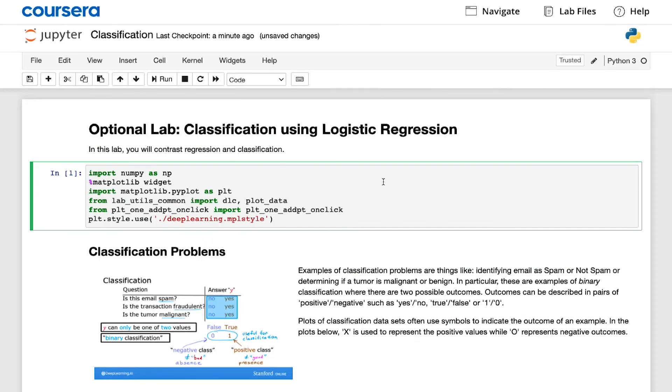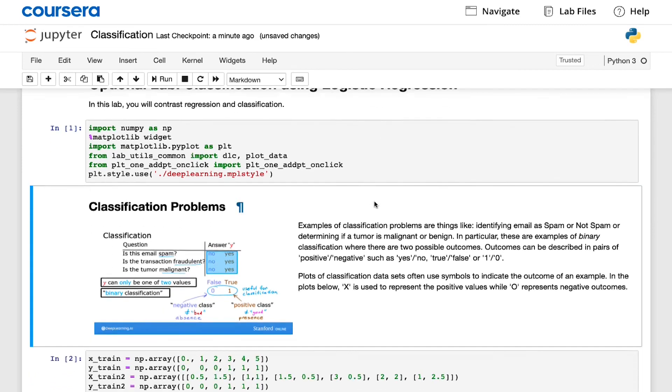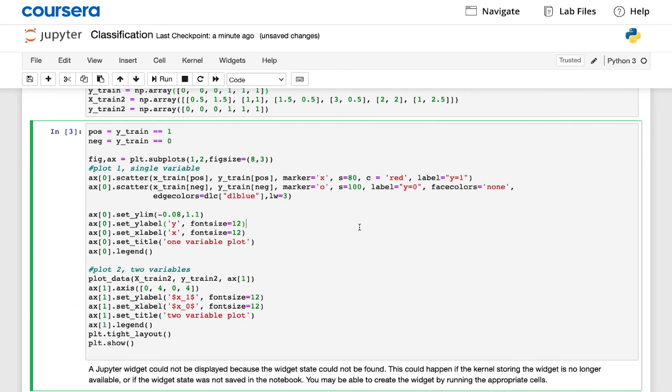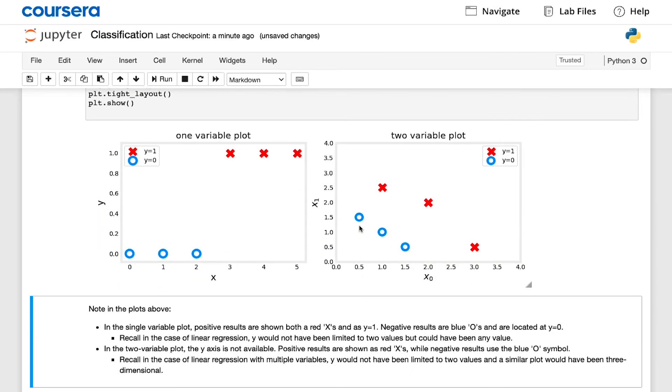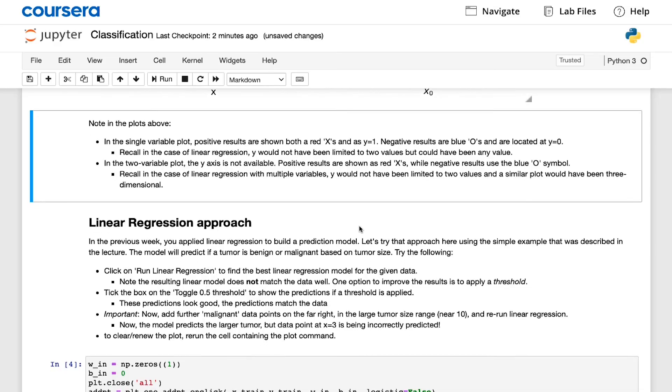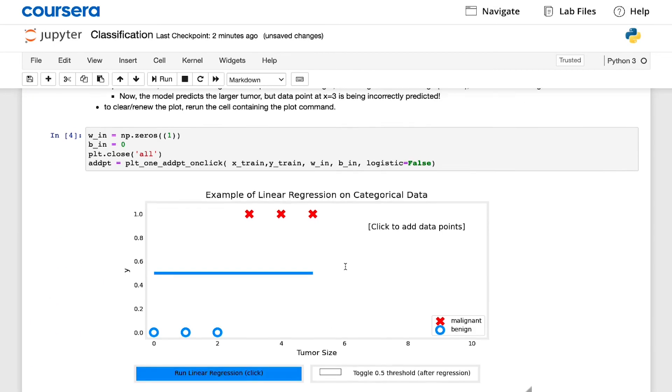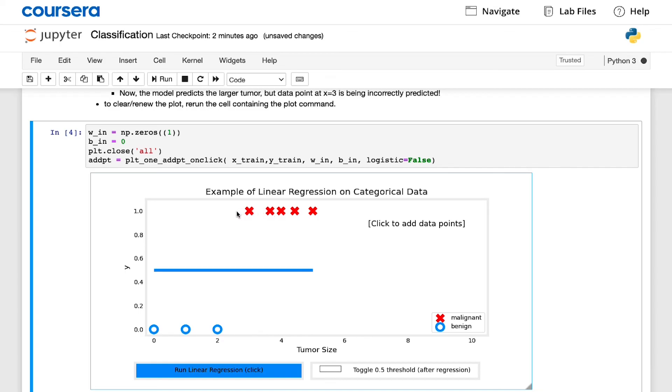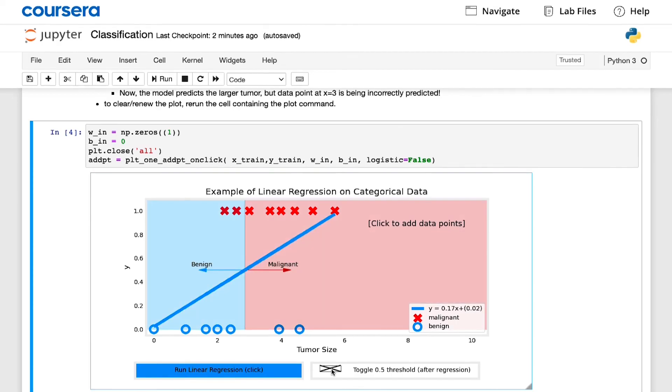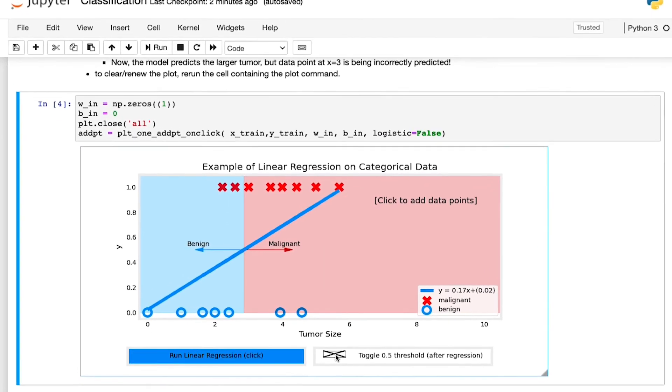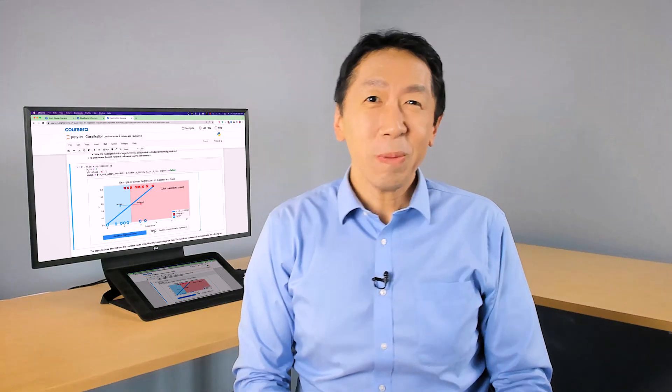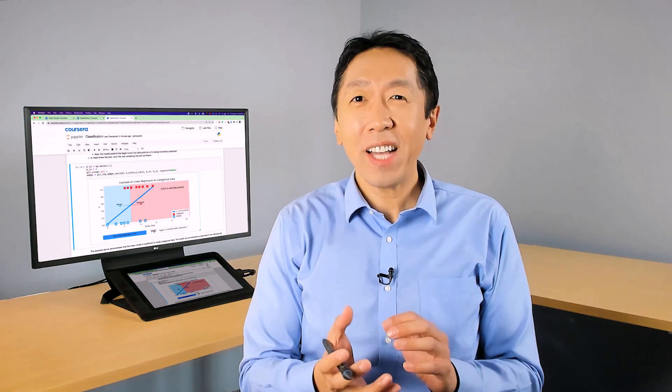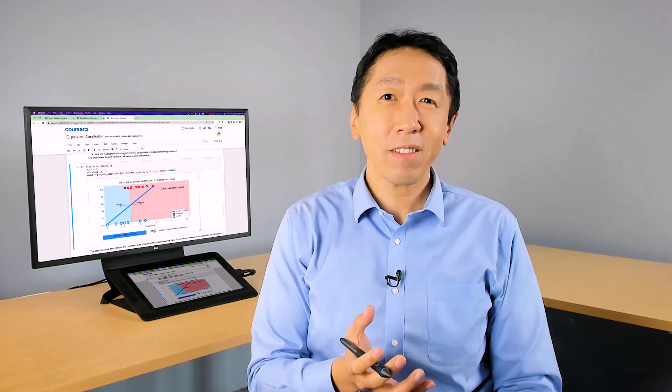In the upcoming optional lab, you'll also get to take a look at what happens when you try to use linear regression for classification. Sometimes you get lucky and it may work, but often it will not work well, which is why I don't use linear regression myself for classification. In the optional lab, you'll see an interactive plot that attempts to classify between two categories, and you'll hopefully notice how this often doesn't work very well, which is okay, because that motivates the need for a different model to do classification tasks. So please check out this optional lab, and after that, we'll go on to the next video to look at logistic regression for classification.